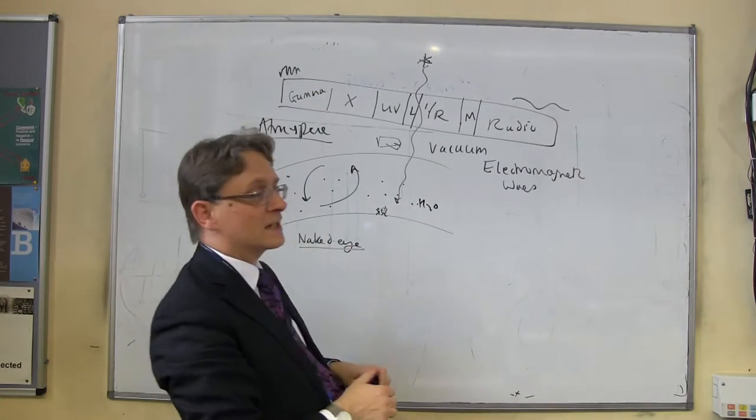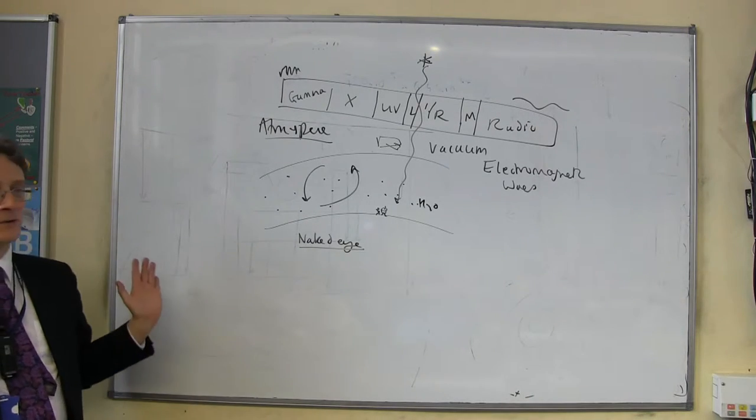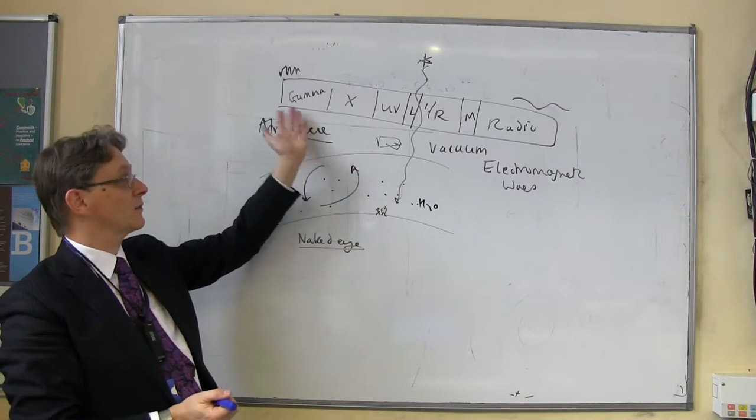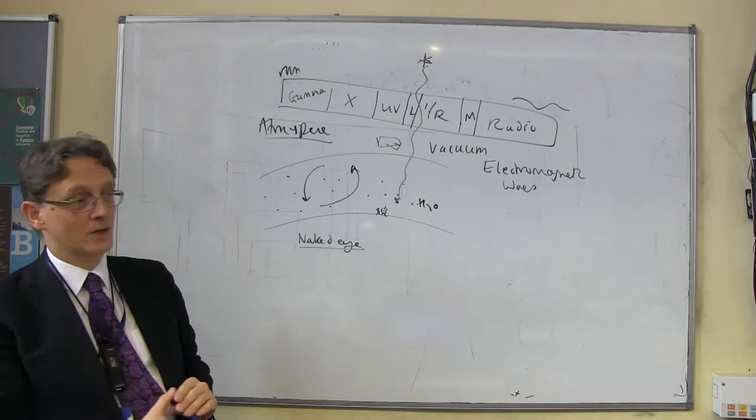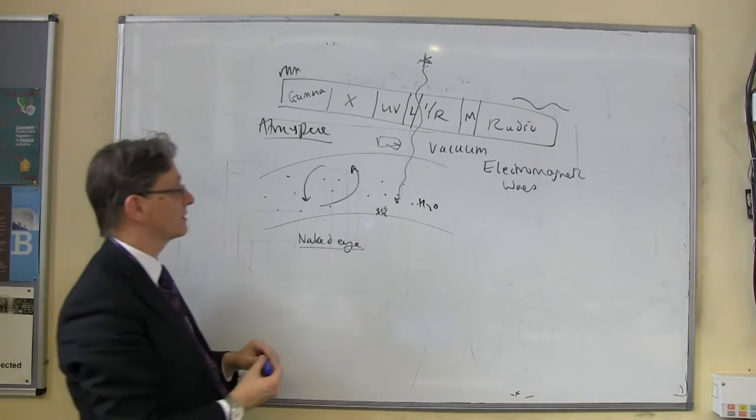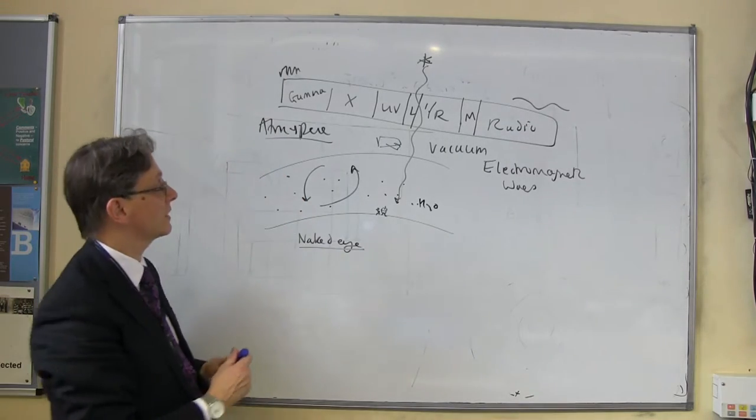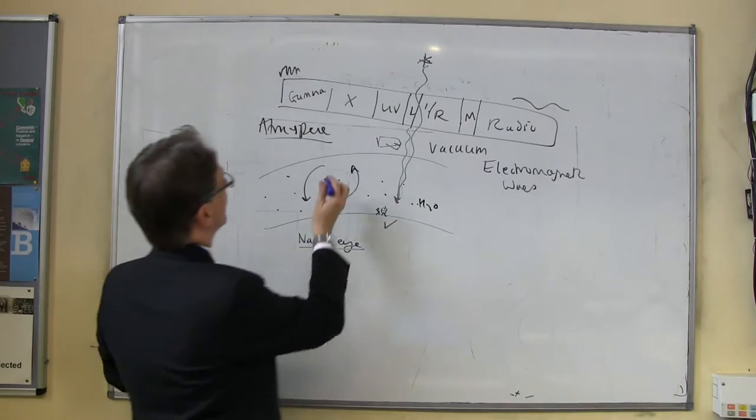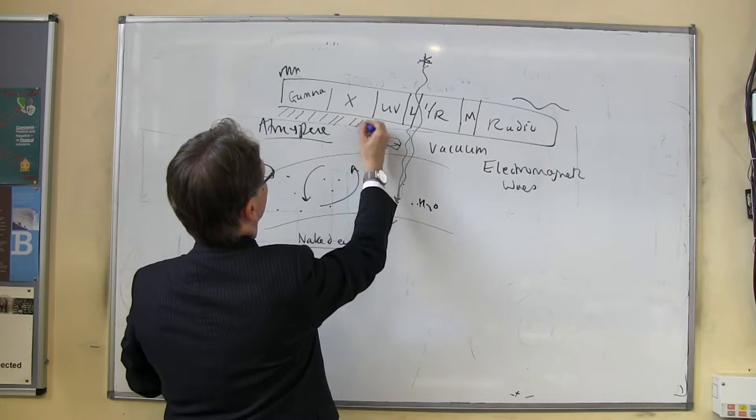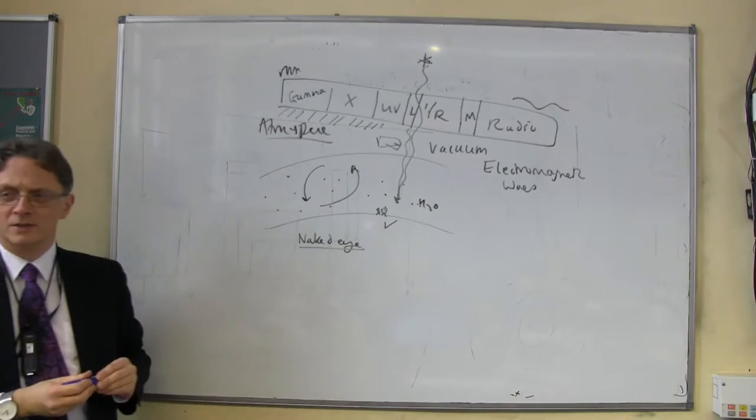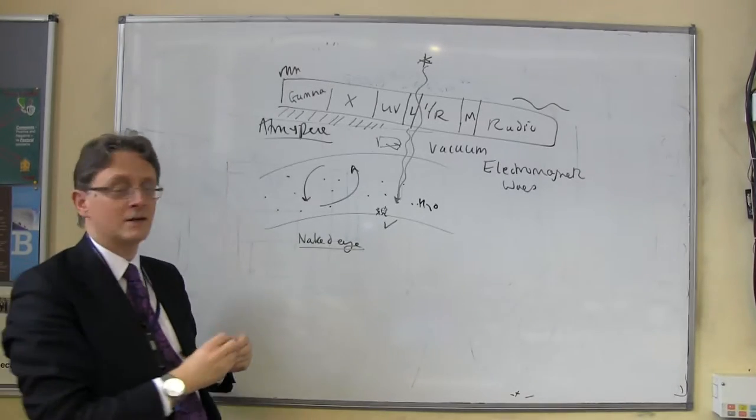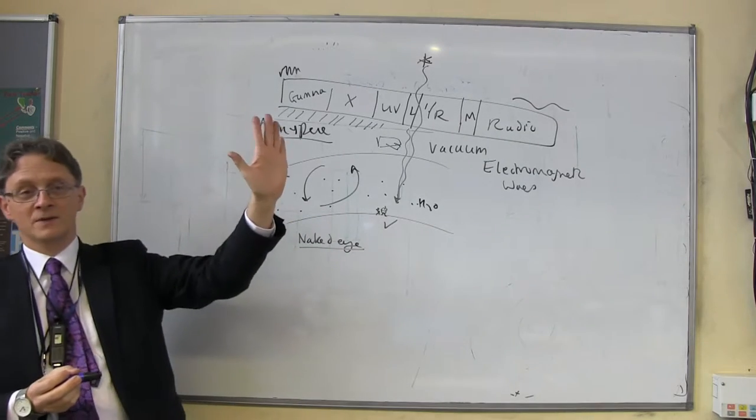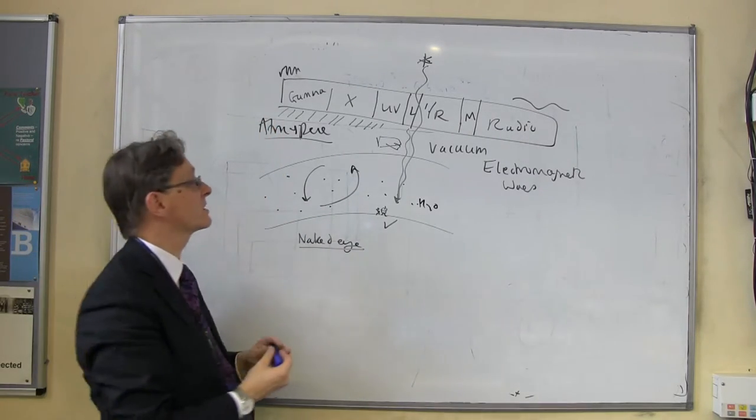Not all of these can get through our atmosphere. None of them gets through unaffected. Some of them just really don't get through at all. The good news is, gamma rays and x-rays are largely blocked by the atmosphere. And that's obviously good news for people like us, and creatures, and animals, and plants, and things living on the earth.